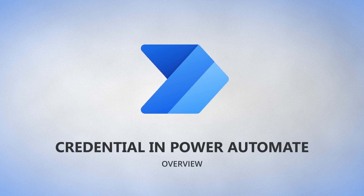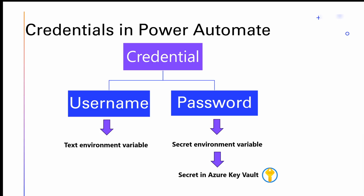Credentials are essentially managed through two types of environment variables: a username, which is a text environment variable, and a password, which refers to a secret environment variable. That secret environment variable points to a secret in an Azure Key Vault. The combination of a username and password makes up a credential.